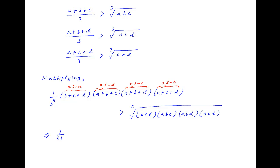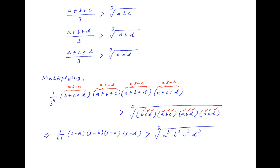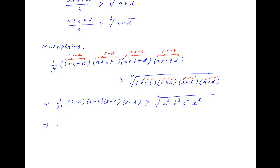Therefore, this inequality can be written as (1/81)(s − a)(s − b)(s − c)(s − d) > cube root of a³ · b³ · c³ · d³. Therefore, (s − a)(s − b)(s − c)(s − d) > 81abcd. And this is the required result.